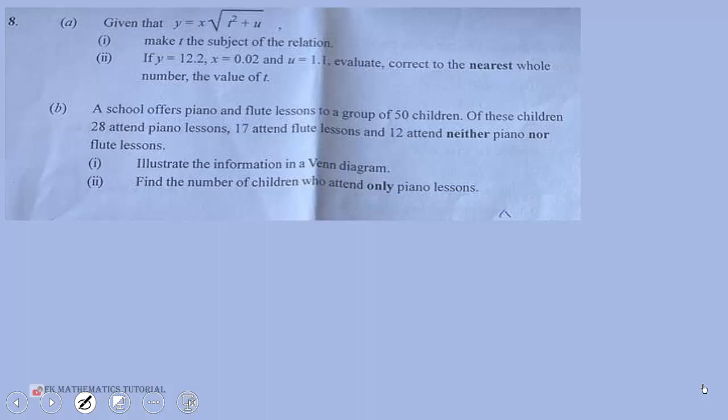If y equals 12.2, x equals 0.02, and u equals 1.1, evaluate to the nearest whole number the value of t.